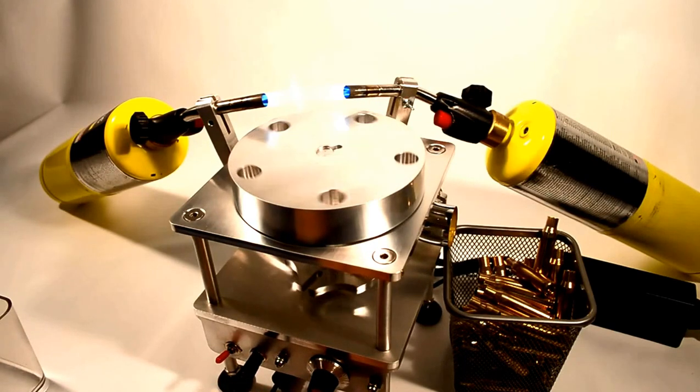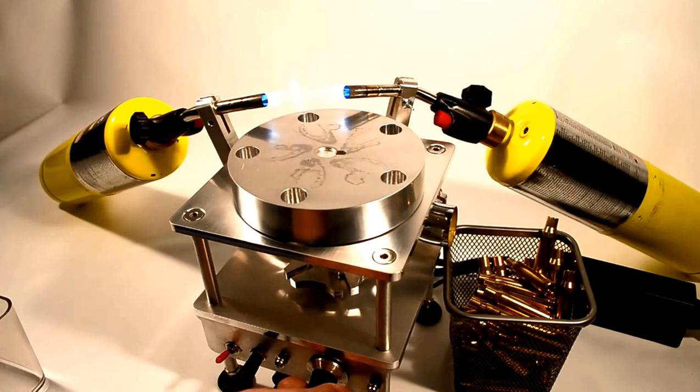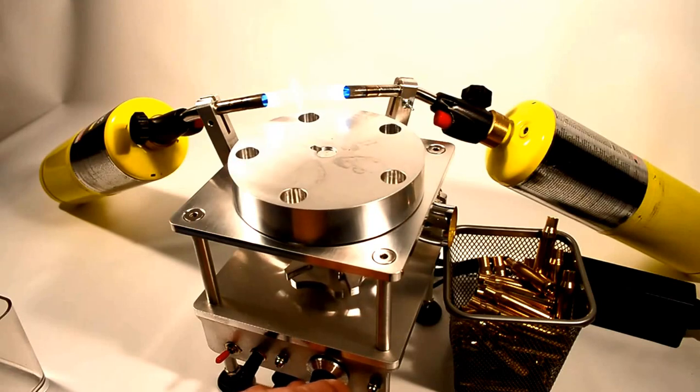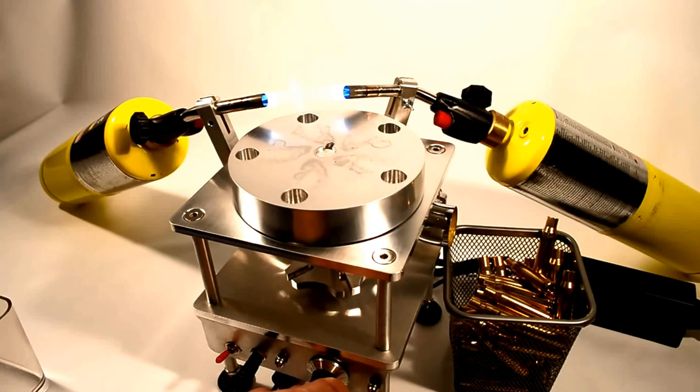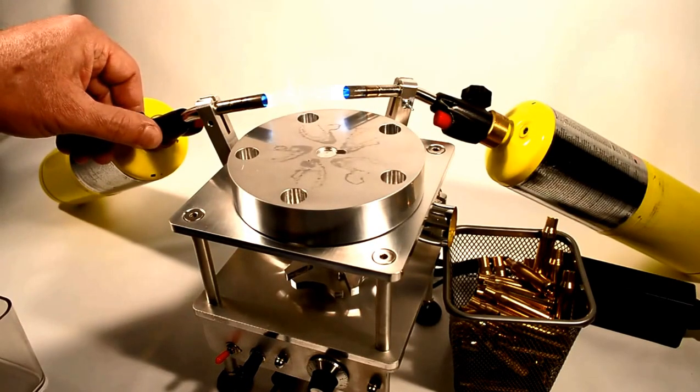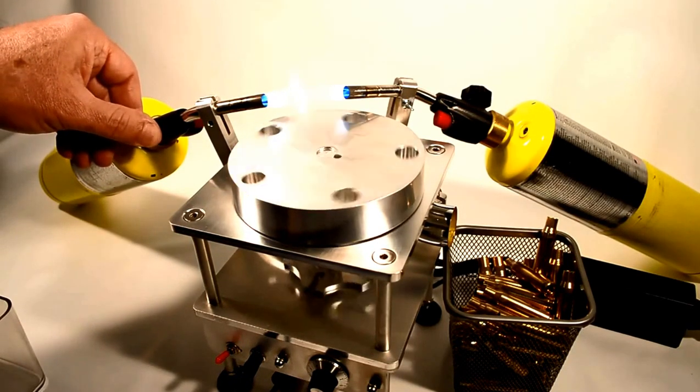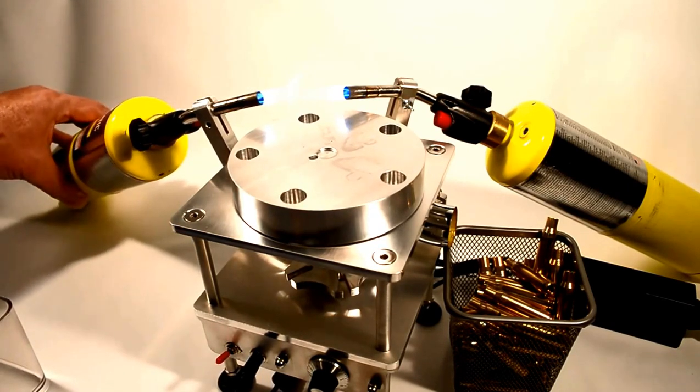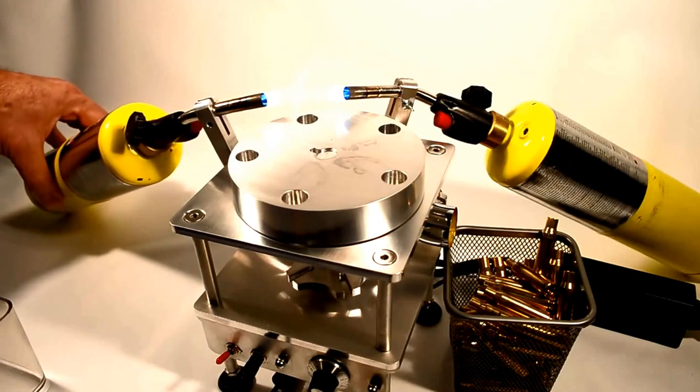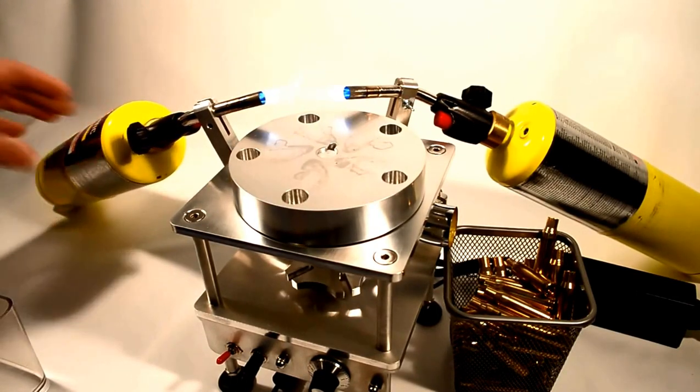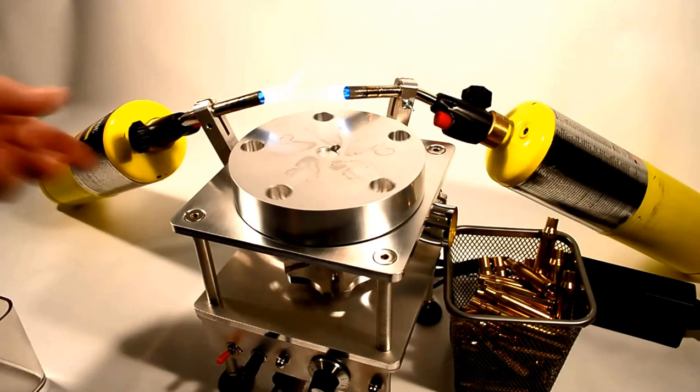I have a speed control down here to increase the speed if you're running different sized cases and you want to run them through a little faster or slower. We can fully adjust the temperatures, increasing the heat on the torches or decreasing it depending on what type of cases you're running. And then we can adjust the height as well just by giving it a little twist up or down depending on the cases, so it all works pretty well.